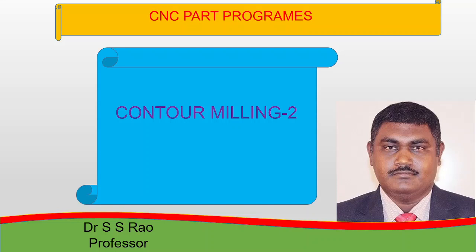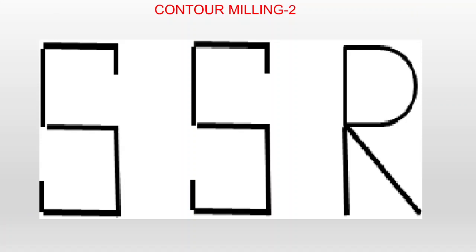In this video I am going to explain contour milling — how to prepare a CNC part program for different contours you want to machine on the surface of a plate. Here I am going to take, for writing the names on the plate, my name: SSR. How you can make the contour of the shape of the letters on the surface of the workpiece — that we will see in this video. This is the contour I want to machine: SSR — contour milling.